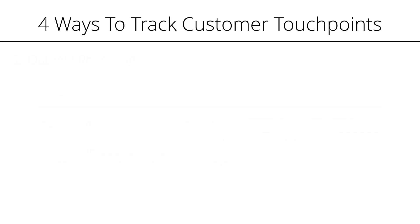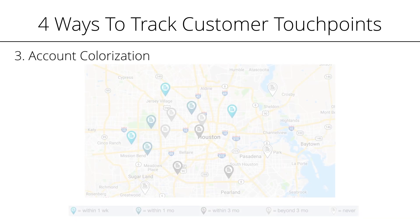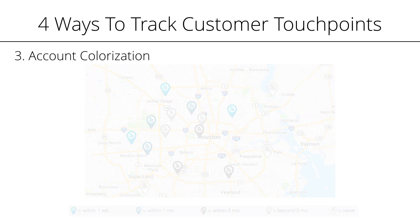Another place you can track your touchpoints is from the accounts page. From there, you can colorize the map by last check-in to see what locations have been visited most recently, as well as locations that haven't been serviced in a while. This could highlight locations that are being ignored and could stand to benefit from having an outside sales rep plan a visit. The colorize feature doesn't stop there — you can also segment your map by deal stage.